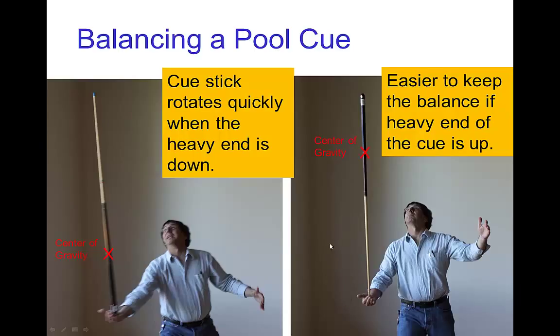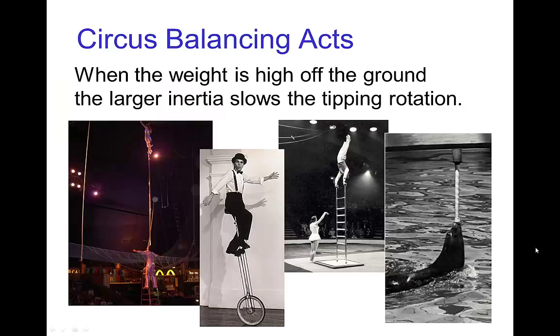So it's easier to balance the pool cue with the heavy end up compared to trying to balance it with the heavy end down. A lot of circus acts take advantage of this by positioning weights as high up as possible. It looks precarious, but actually that helps make it easier to balance by having the weight as far away from the axis of rotation as possible that increases the rotational inertia.